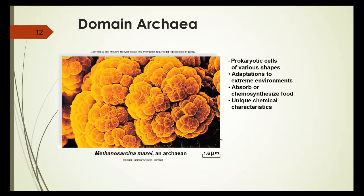So let's look at those three domains a little closer. Domain eukarya, prokaryotic cells of various shapes. They have adaptations to extreme environments, such as those that may have existed when the world was formed. Absorb or chemosynthesize food, and they have unique chemical characteristics.